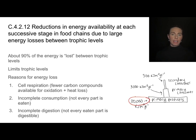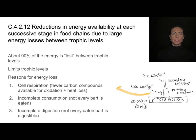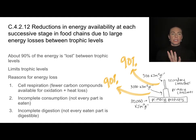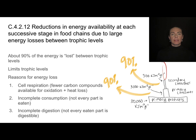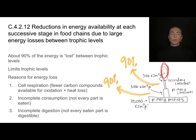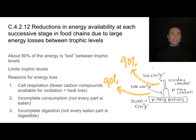If only 10% of the energy is moving on to each trophic level, where is the rest of the 90% going? This massive energy loss is what limits the number of trophic levels in a food chain. Typical food chains don't have more than three or four levels — it limits the amount of organisms or biomass that can be sustained at higher levels because of this massive energy loss.